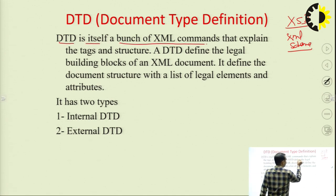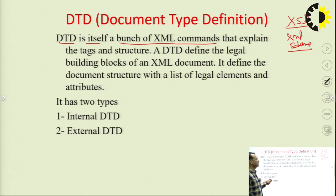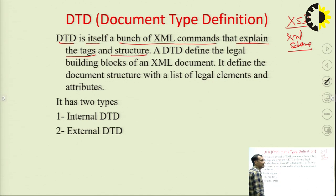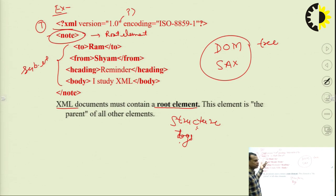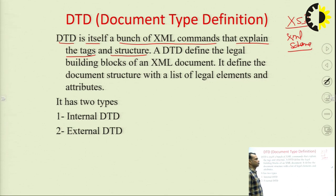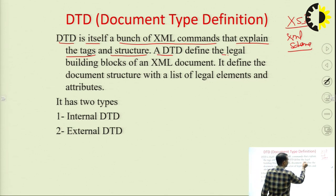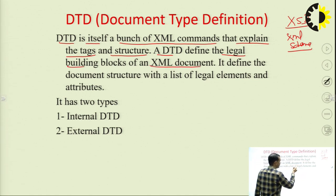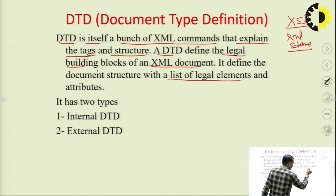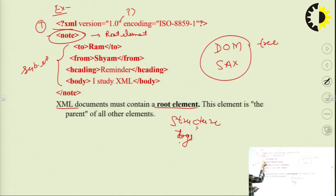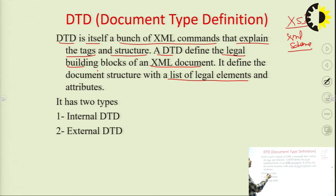DTD is itself a bunch of XML commands that explain the text and structure — the root element, child elements, their values, and attributes. In other words, a DTD defines the legal building blocks of an XML document. It defines the document structure with a list of legal elements.